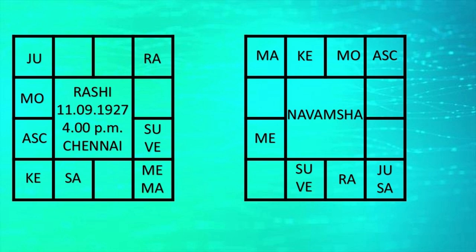Here in Navamsha, only Venus is a bit weak. Sun is in its friendly house. In Capricorn, Mercury is alone in its friendly house. In the house of Jupiter, Mars resides. In the house of Mars, Ketu resides. And Moon is finally in an exalted position in Taurus.